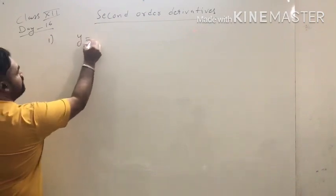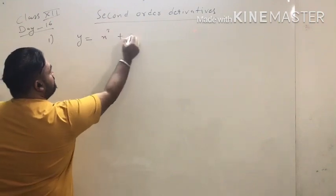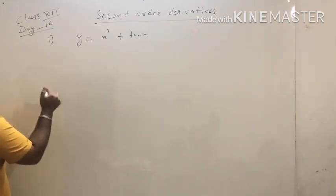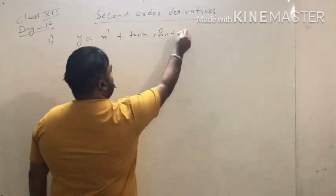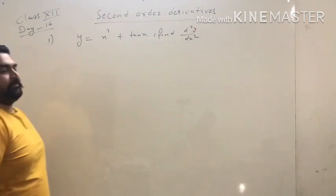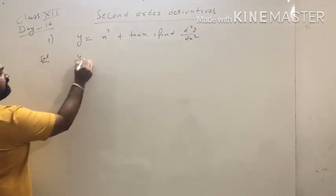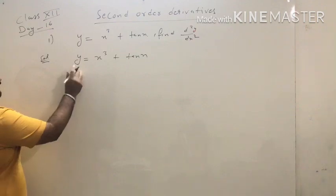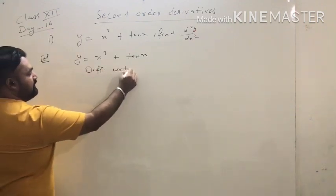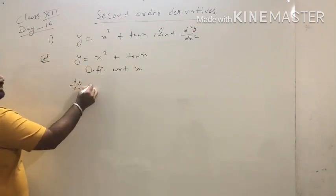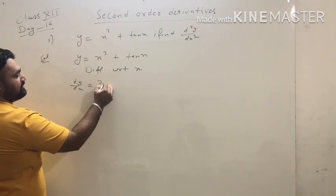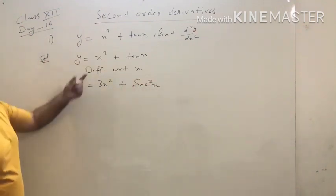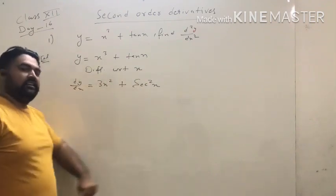For example, if the question is y equals x cubed plus tan x, we have to find the double derivative. Double derivative means we have to find d²y/dx². Now differentiate with respect to x. The derivative of x cubed is 3x squared, and the derivative of tan x is secant squared x.